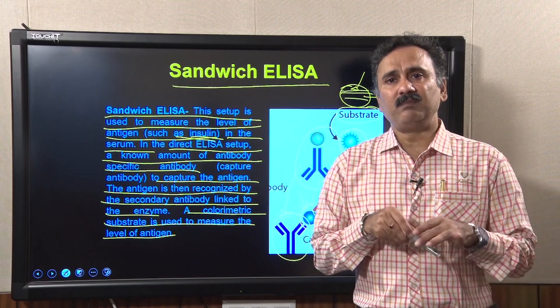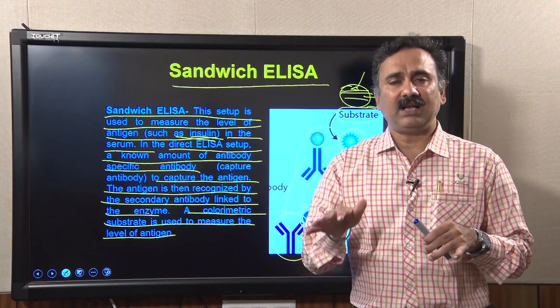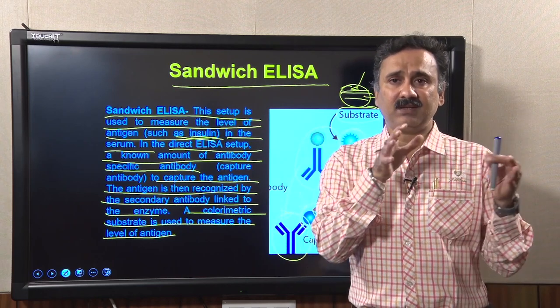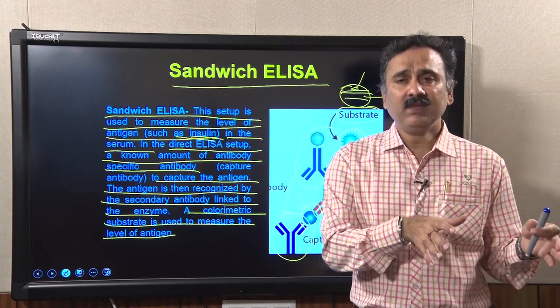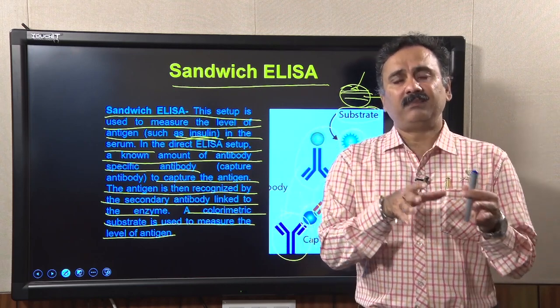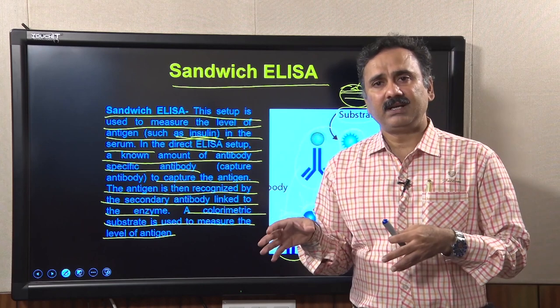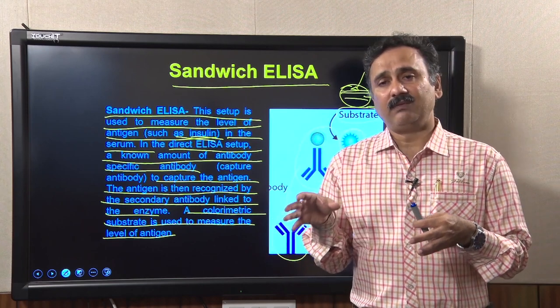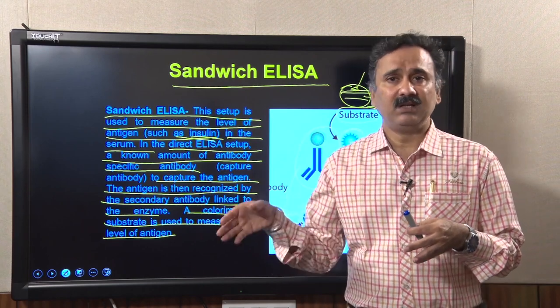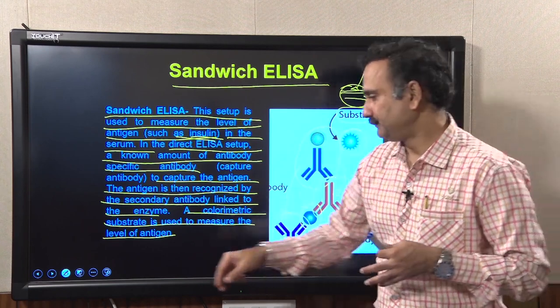You then add the substrate, which gives a colored product, allowing you to measure the level of antigen present in the patient's sample or biological fluid. The purpose of sandwich ELISA is to measure the antigen, whereas the purpose of indirect ELISA is to measure the level of antibody present in the blood.